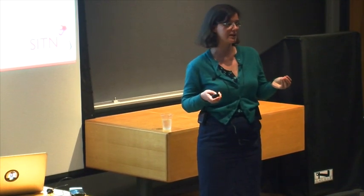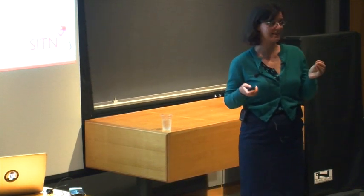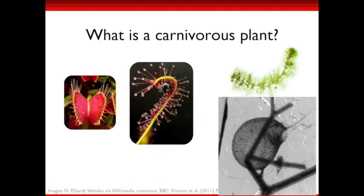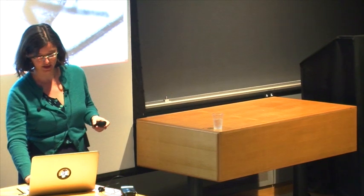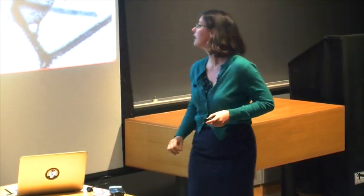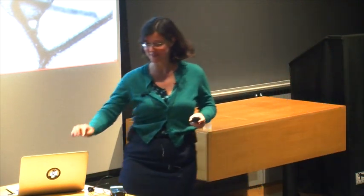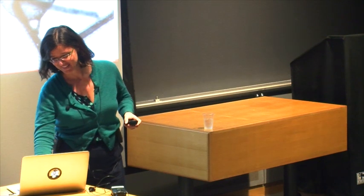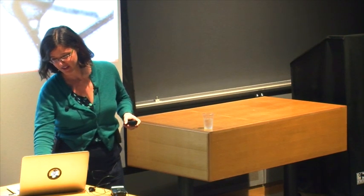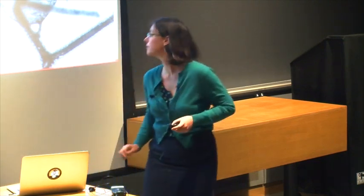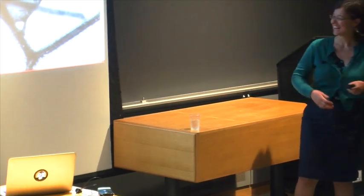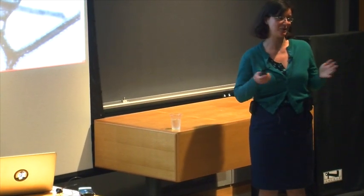This is a bladderwort. They have bladder traps, which are sort of suction traps. They're mostly underwater and quite small, but this is the fastest moving carnivorous plant. They also have trigger hairs like the Venus flytrap, and when triggered they very quickly suction in prey. This video has been slowed down 72 times because it's too fast for the human eye to see. It's probably one of the fastest plant movements in the whole plant kingdom.